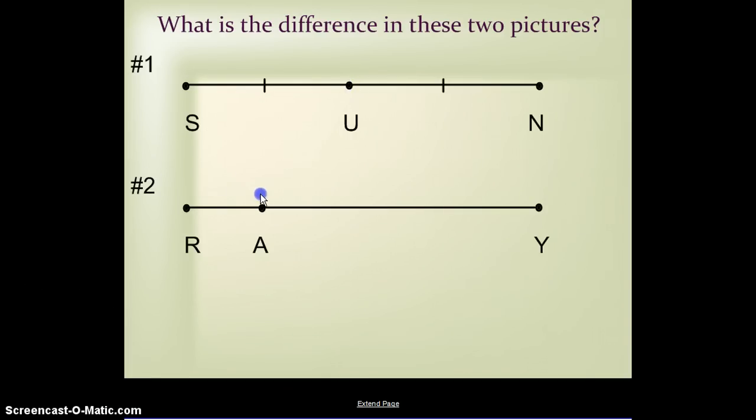U would be considered a midpoint, and there's only one and only one midpoint in a segment. However, in line two, A is just a point that's between. There are a finite number of points that are between R and Y, but there's clearly more than just A.